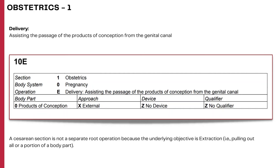The root operation delivery is used only for a normal vaginal delivery. Remember, there is only one single code in the entire PCS coding tables for normal vaginal delivery: obstetrics, pregnancy, delivery, products of conception, external, no device, no qualifier. Cesarean section is coded to extraction as the root operation, and not delivery — that's a very important point to remember.